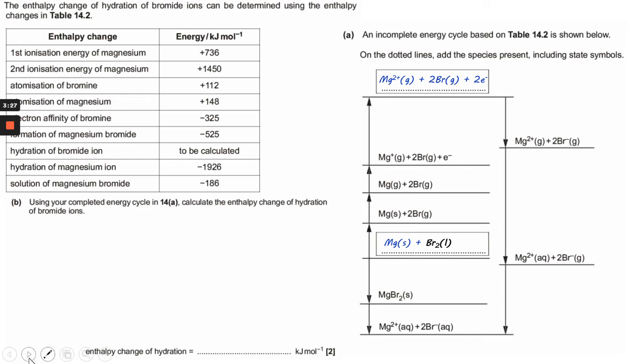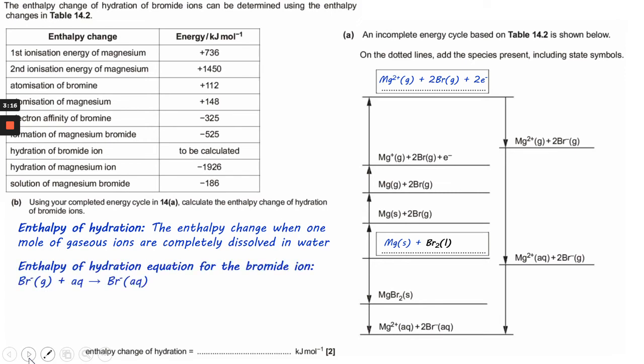So let's first of all think about what hydration means. It's the enthalpy change when one mole of gaseous ions are completely dissolved in water. We're trying to apply this to bromide, so that's the equation for the bromide ion hydration. You should look at where this species and this species exist in a Born-Haber cycle.